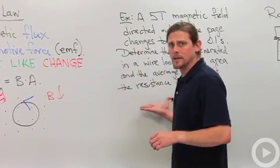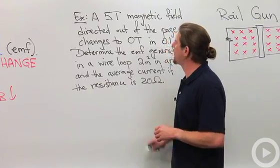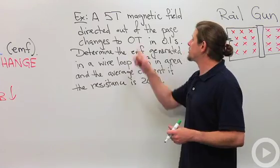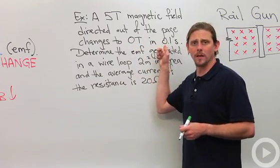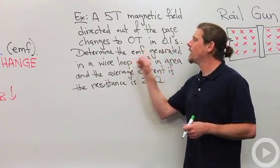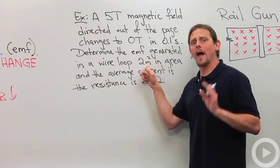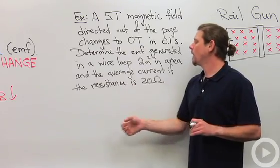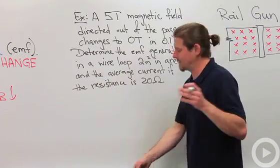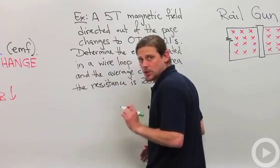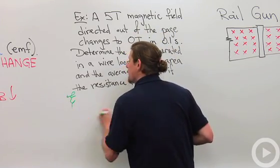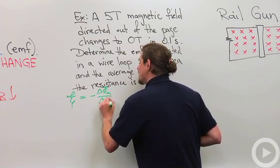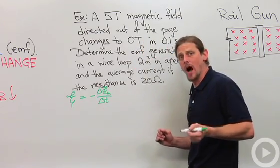Let's do an example. So this is a numerical example. I've got a five Tesla magnetic field and it's directed out of the page and it changes to zero Tesla in 0.1 seconds. And I want to know the EMF that's generated in a wire loop that has two square meters of area. And I want to know the average current if the resistance is 20 ohms. So let's see how this goes. First thing I need to do, because the EMF is equal to minus the change in flux over the change in time, I need to find out the change in flux.